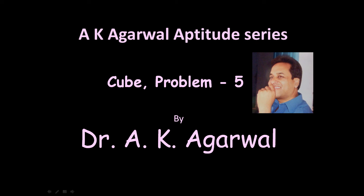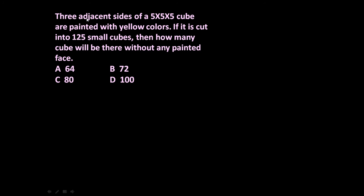Hello friends and welcome to AK Agrawal aptitude series. In this session we are going to learn a technique for solving a problem on a cube. The given problem is: 3 adjacent sides of a 5×5×5 cube are painted with yellow color. If it is cut into 125 small cubes, how many cubes will be there without any painted face? 3 sides are painted and 3 sides are blank.